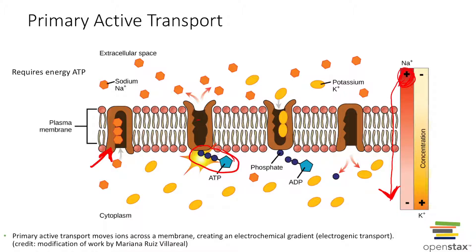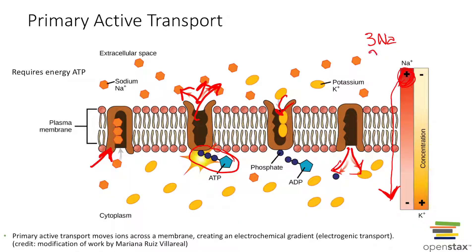The protein changes shape, the sodium leaves the cell, and two potassiums attach and are brought into the cell. That phosphate group breaks away, the potassiums enter, and the cycle starts all over again. So this sodium-potassium pump pumps out three sodiums outside the cell and brings in two potassiums.